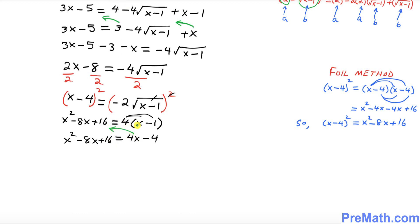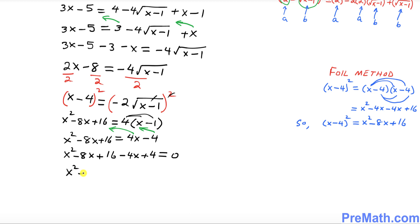Move everything to the left-hand side: we already have x squared minus 8x plus 16; the 4x becomes negative 4x and negative 4 becomes positive 4. Combining like terms: minus 8x minus 4x is minus 12x, and 16 plus 4 is 20, giving x squared minus 12x plus 20 equals zero.